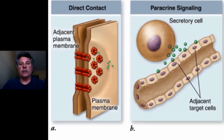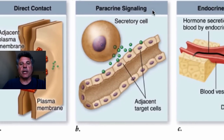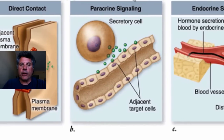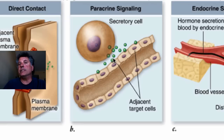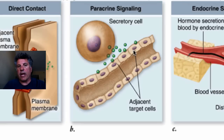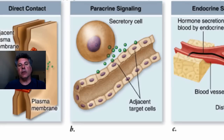The next type of cell communication is called paracrine signaling, in which the signaling cell secreting a signal and the receiving cell are fairly close together — on the order of several hundred microns. They're usually within the same tissue or in nearby tissues. That is called paracrine signaling when the signaling and receiving cells are fairly close together.